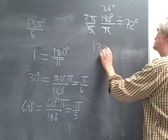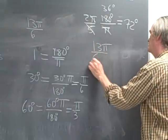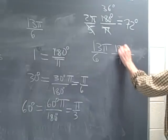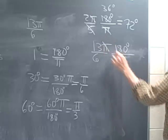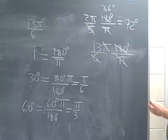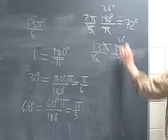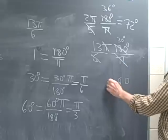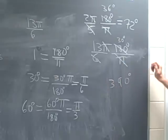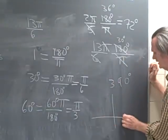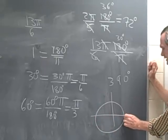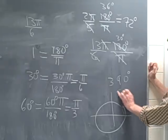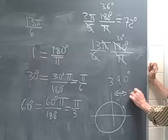How about 13π over 6? This is a strange angle. Let's divide through by π, multiply through by 180. The π's cancel. 6 cancels here. We get 30 here. So we have 13 times 30. That's got a 3 in it, that's got a 9 in it. So that's 390 degrees. Now 390 degrees, let's see. If we went around 360 degrees, we'd be there. So 390 degrees corresponds to an angle of 30 degrees.